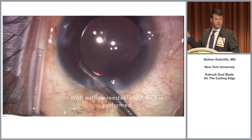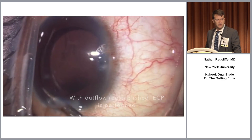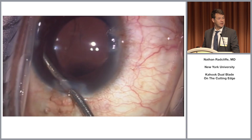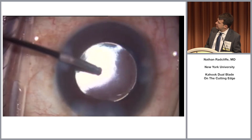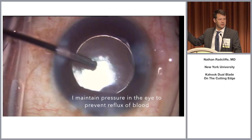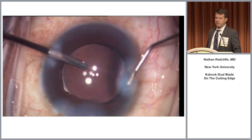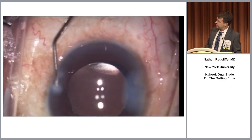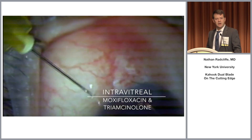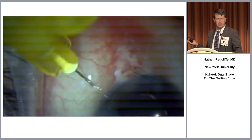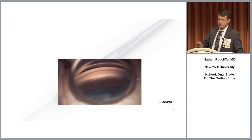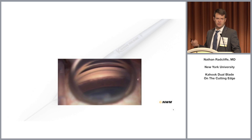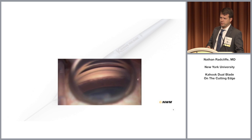It's nice to see that you've done something. I'll sometimes add endocyclophotocoagulation — I add it sometimes to my Ahmed valves as well to try to get a dual mechanism and decrease the pressure spike to avoid the hypertensive phase. After the procedure it looks like standard cataract surgery — this really is minimally invasive glaucoma surgery with good visual acuity outcomes. I inject tri-moxy at the end, which I do with my MIGS cases because it helps with compliance post-operatively and I don't have pressure problems related to it.